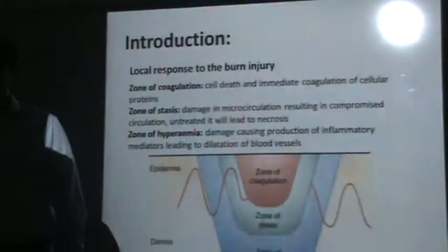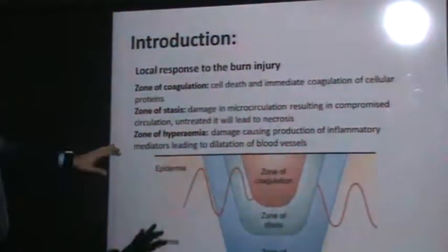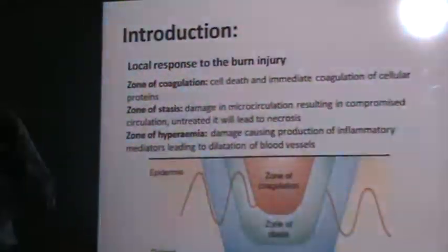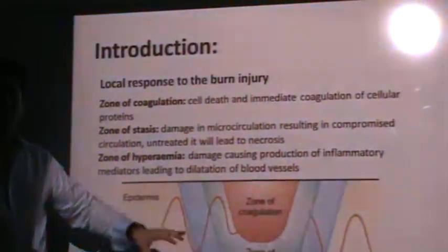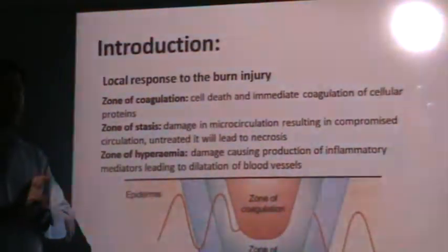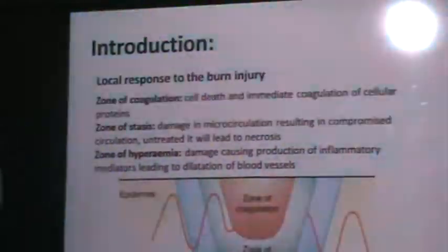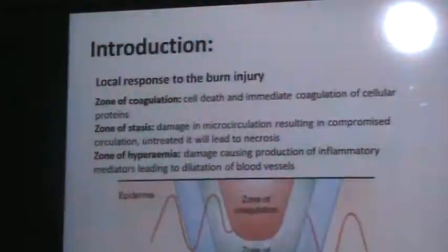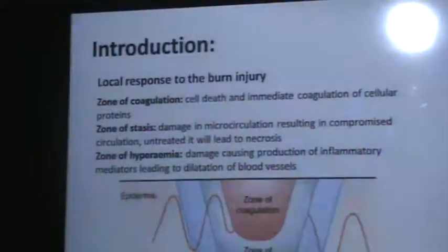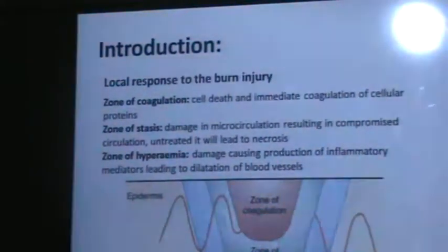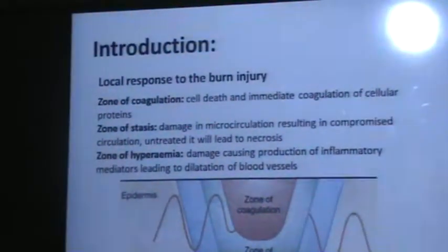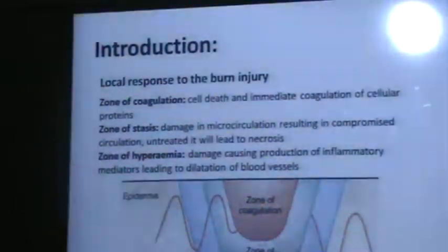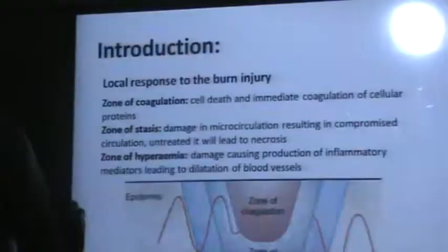Let's look at this diagram showing what happens when a certain lesion or area of the body comes into contact with a burn. What could cause a burn? Fire, sun — so heat — chemical, or electric. Those are basically the types that would cause a burn.